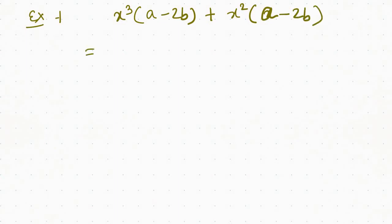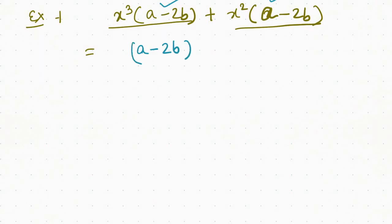Because if you want a problem with the problem, you don't have a problem. So, this is the first question: if you have a minus 2b, then you have a minus 2b. Now, how common is it? So, x is common.